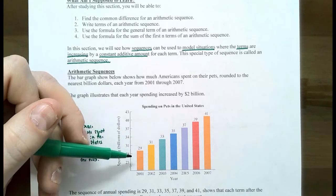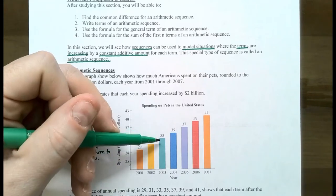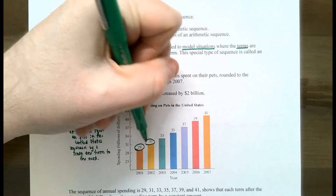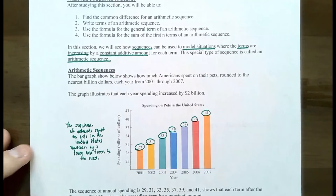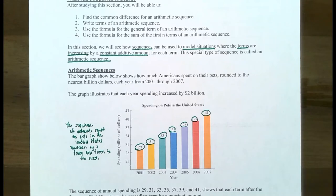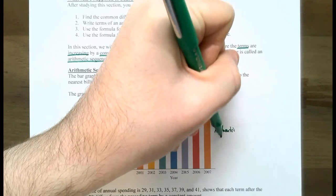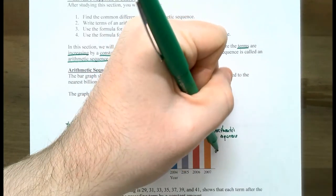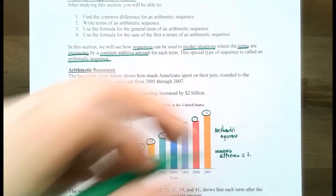So in 2001, the amount spent on pets in the United States was $29 billion, and then in 2002 it became 31 billion, then 33 billion, then 35 billion, up until 2007 it was $41 billion. These amounts spent give us a sequence of amounts: 29, 31, 33, 35, 37, 39, and 41. This sequence of numbers increases by a constant additive amount — you need to add two from one term to get to the next term. So this is called an arithmetic sequence, and the amount you are increasing from one term to the next is called the common difference. The common difference in this sequence is two, representing $2 billion.